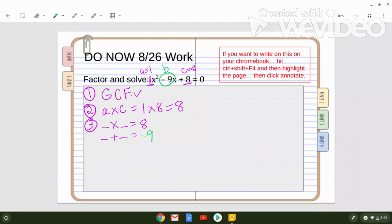So hopefully you're thinking about two numbers that multiply together to give you positive 8 but add together to give you negative 9. Hopefully you've come up with negative 8 times negative 1. So I got my factors here, negative 8, negative 1.